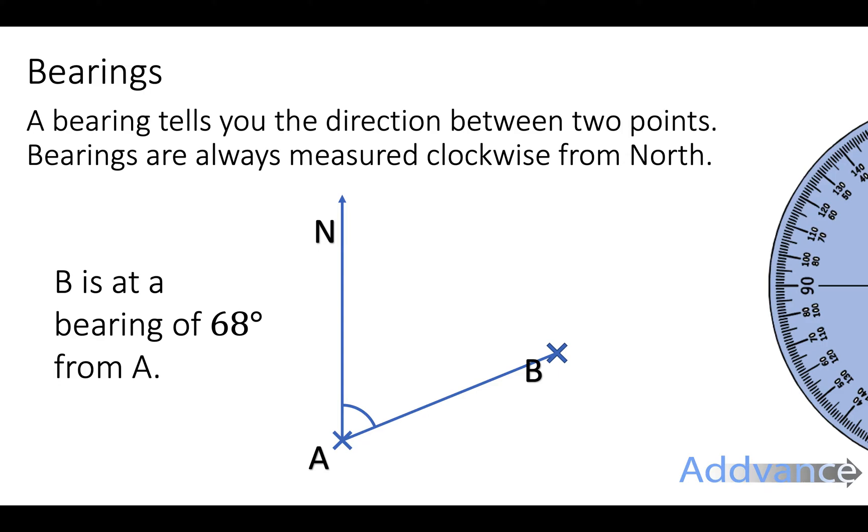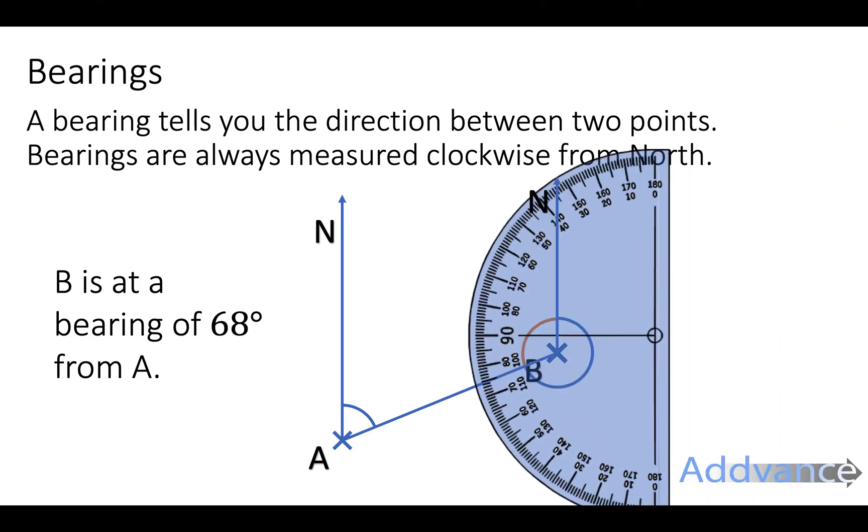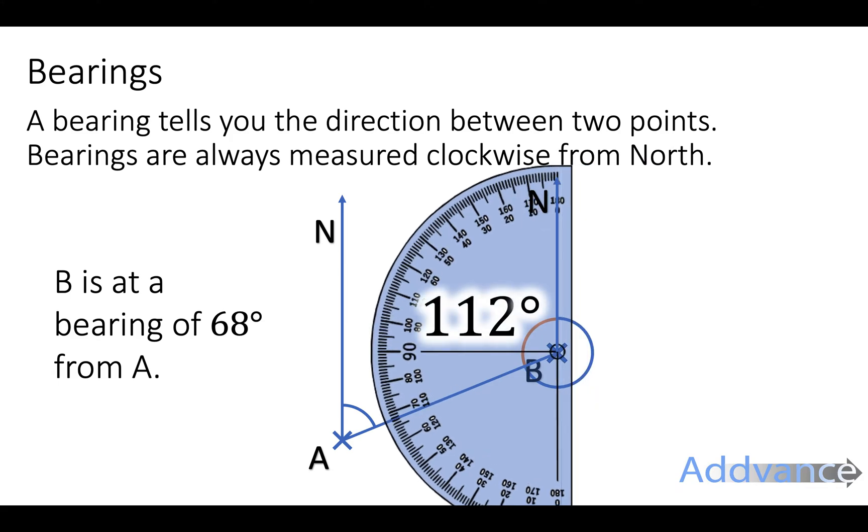That's how we say it because we're starting at A, from A, and we're going to B. Now let's think about the other way. We're trying to find this angle, this bearing to A from B. To measure this, what we're going to do is measure the small obtuse angle with our protractor like this, and this will be 112 degrees.